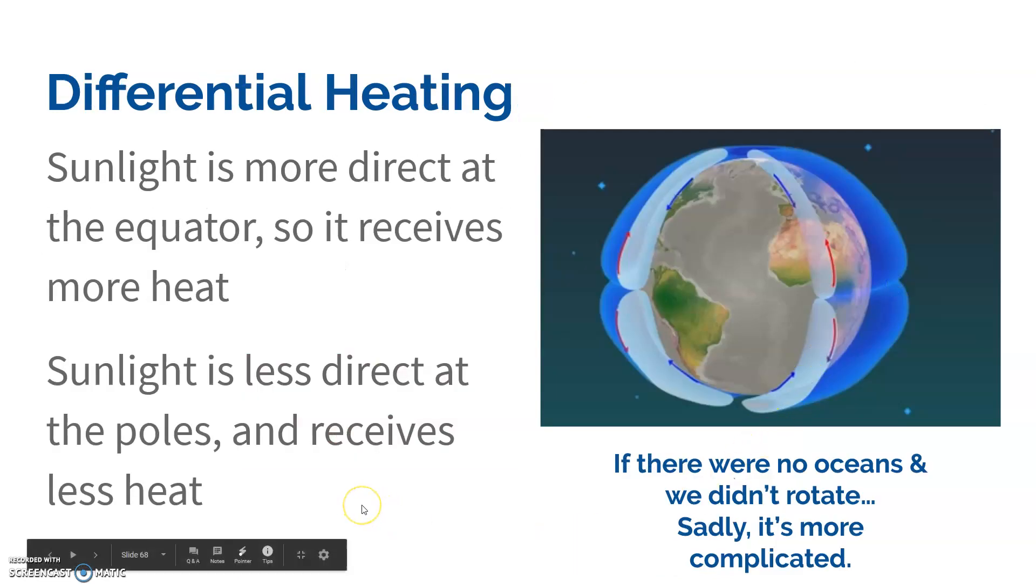If there were no oceans and we didn't rotate, we would see two giant convection currents. Because the equator is getting a lot of heat, and as that air heats, it rises and becomes less dense. Then as it gets further up, it cools off and then it sinks. We would see one giant convection current from the equator to the poles, and that has to do with how much direct heat is being felt.